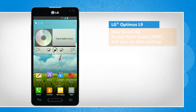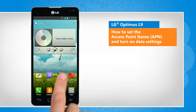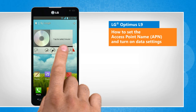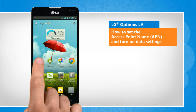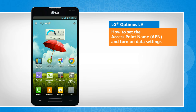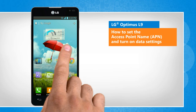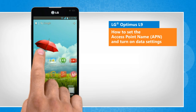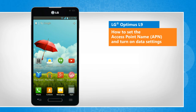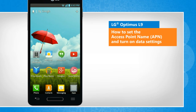Hi friends! Access Points Name, or APN, is a setting on your LG Optimus L9 smartphone that identifies an external network your phone can access for data. Here are the steps to set the APN and turn on data settings on your LG phone.